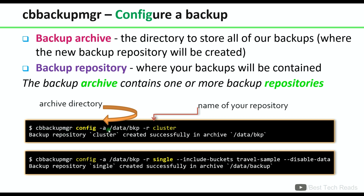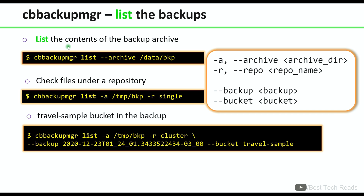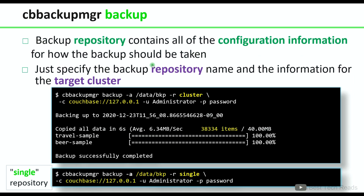A sample command: `cbbackupmgr config -a <directory> -r <repository_name>` — it will create a repository named 'cluster' inside the `/data/bkp` directory. Another example creates a repository named 'single', which will take only one bucket since we provided only one bucket for `--include-buckets`. To list the contents of the backup archive, the command is `cbbackupmgr list`.